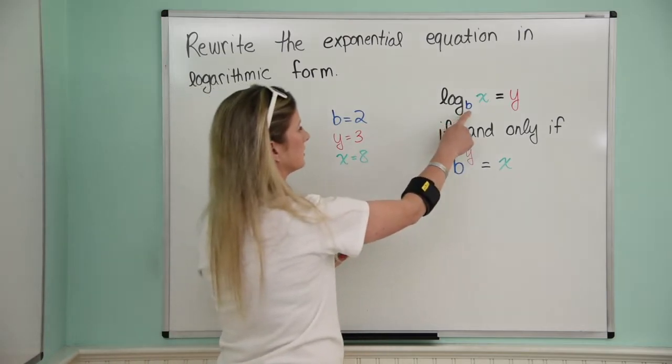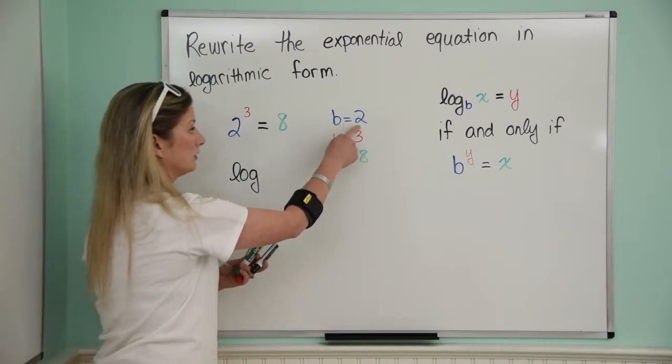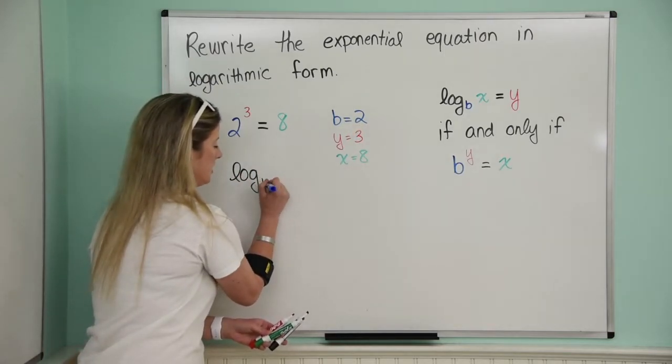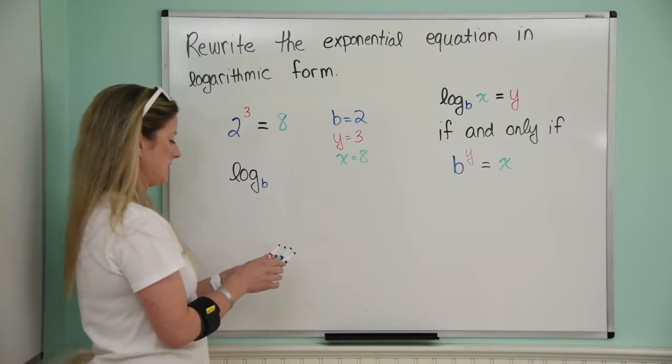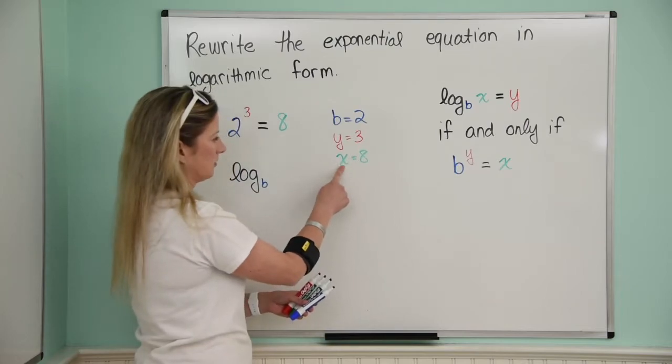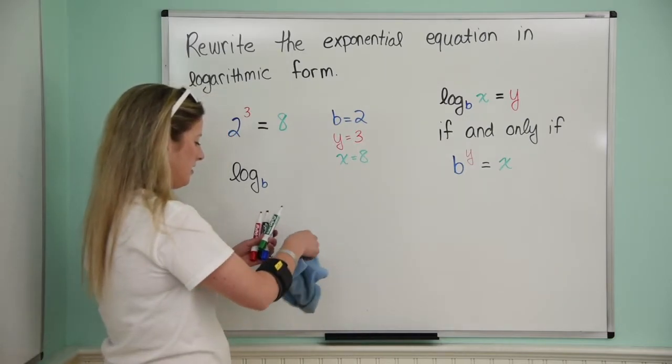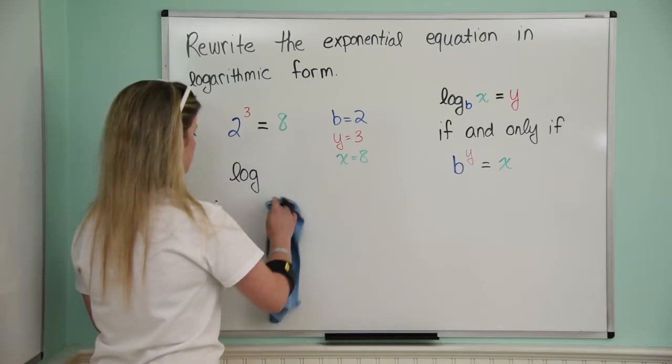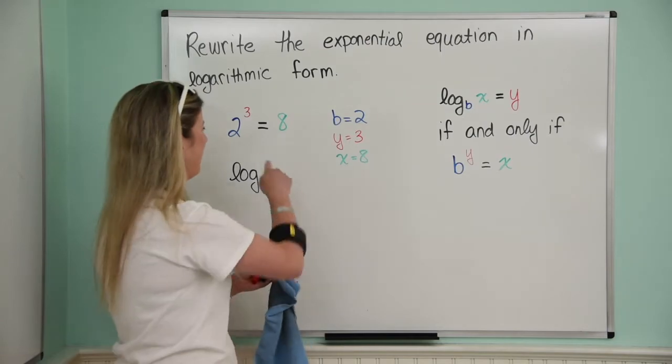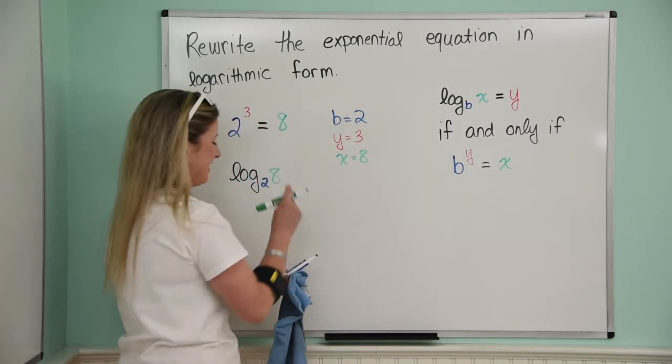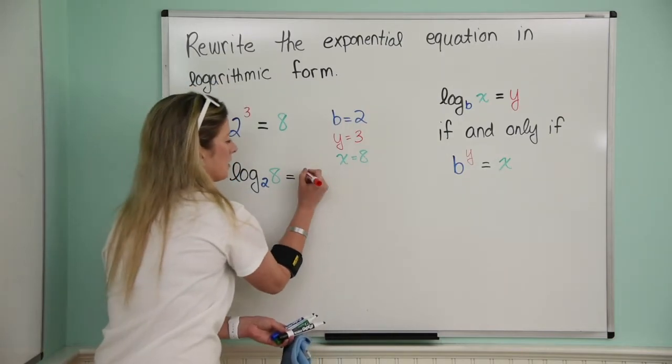All right, so now that we have everything, we know it goes log base b of x equals y, so we come over here and we say, okay, log base b, and what was b again? Well, b was 2. Here's the base. b was 2, and that's a great thing is that in exponential or logarithmic form, it's always the base is the base, which is kind of easy to remember, makes things easier. Okay, log base b of x, x, so what's x? Well, x is 8, okay? Oh shoot, I messed up. This was supposed to be log base, not b. I wrote b, but b was 2, and then I wrote b over there. Oh my goodness, I need a nap. Okay, so log base 2 of x, x equals 8, okay? Equals y, and y is 3. Perfect.